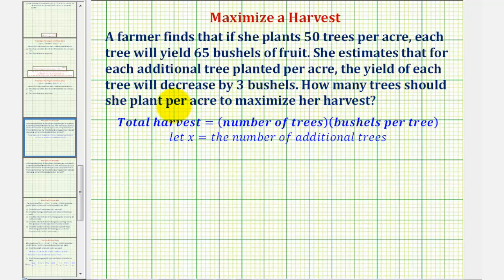So the total harvest per acre is going to be equal to the number of trees times the number of bushels per tree. So if we let x equal the number of additional trees, we could say h(x), the harvest per acre, would be equal to the total number of trees, which would be 50 plus x, times the number of bushels per tree.